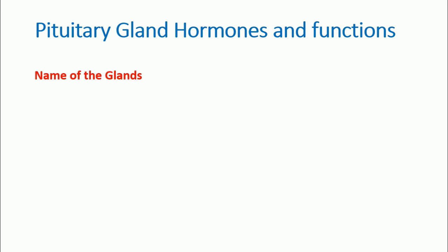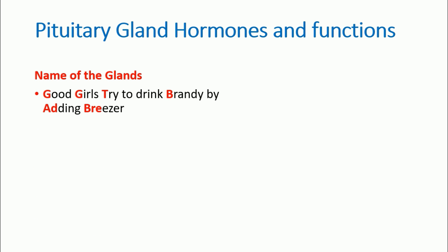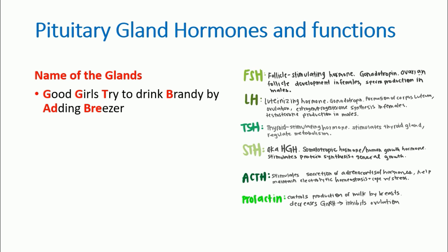Before listing the hormones, remember this sentence: 'Good girls try to drink brandy by adding breezer' — breezer being a variant of beer. From this sentence you can identify all the glands where pituitary hormones work. The first two letters G-G stand for gonads, specifically the follicles and other parts of the gonad.